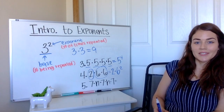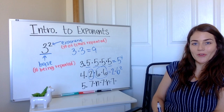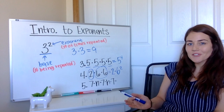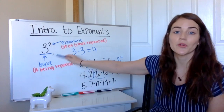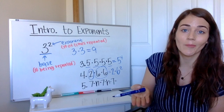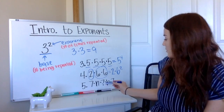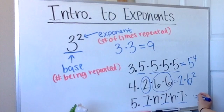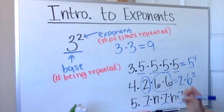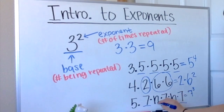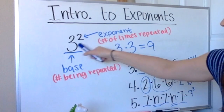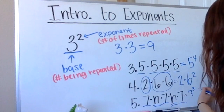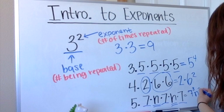Our last one has letters, but they really just work the same way. We're going to look for our bases — a number or variable representing a number that is being repeated. We can see that we have seven being repeated one, two, three times, so that means we're going to have seven to the third. And then I also have n times n. Just like three times three is three squared, n times n is going to be n squared.